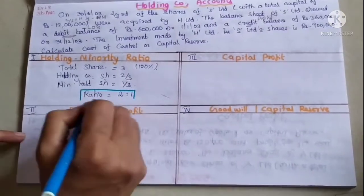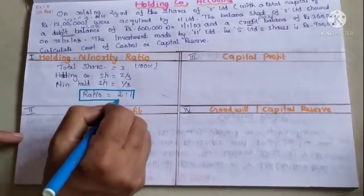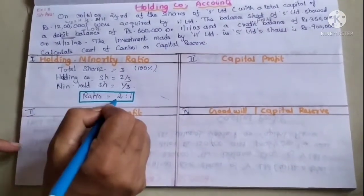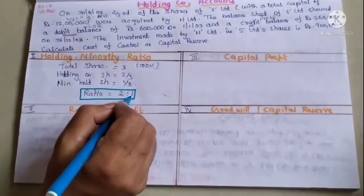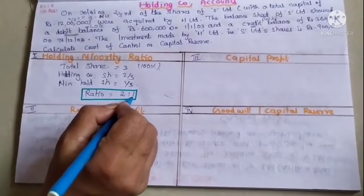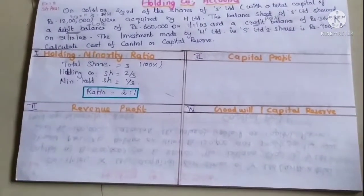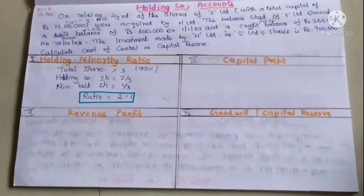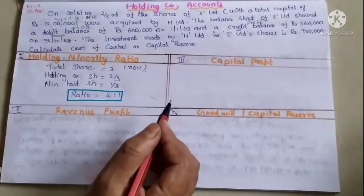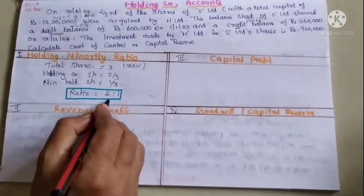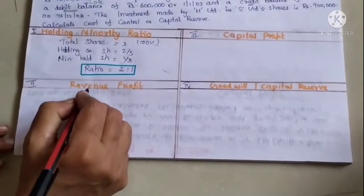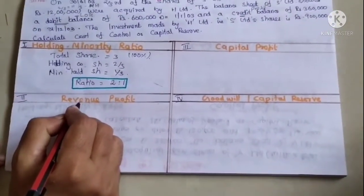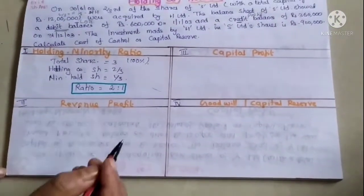The profit sharing ratio: holding company gets two-thirds and minority holders get one-third. This applies to both revenue profit and capital profit.